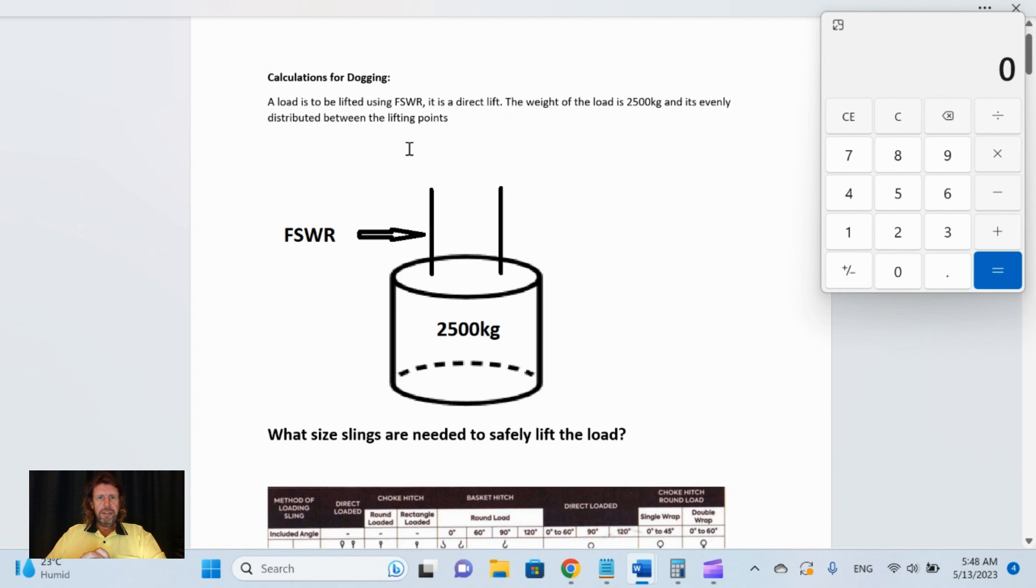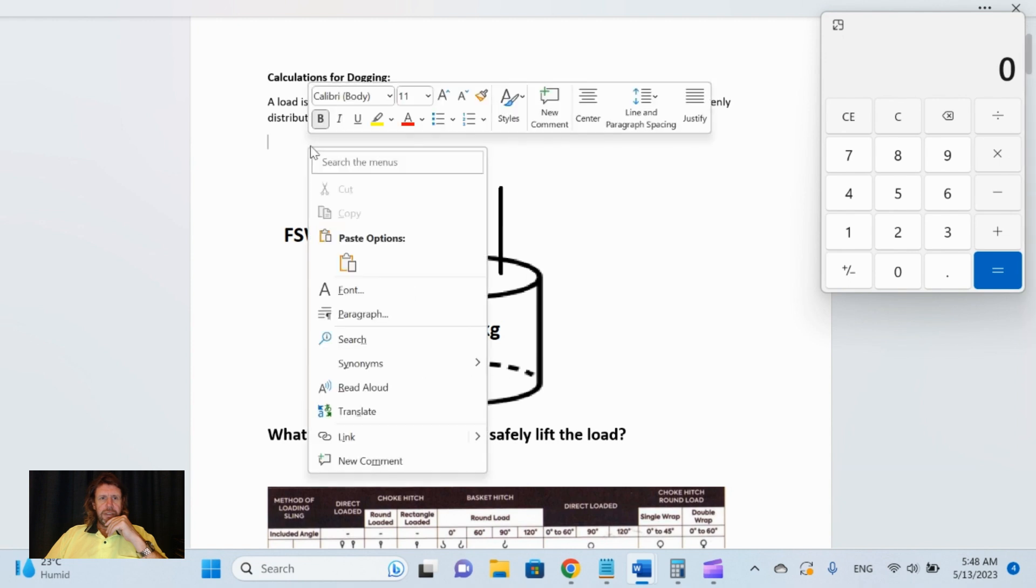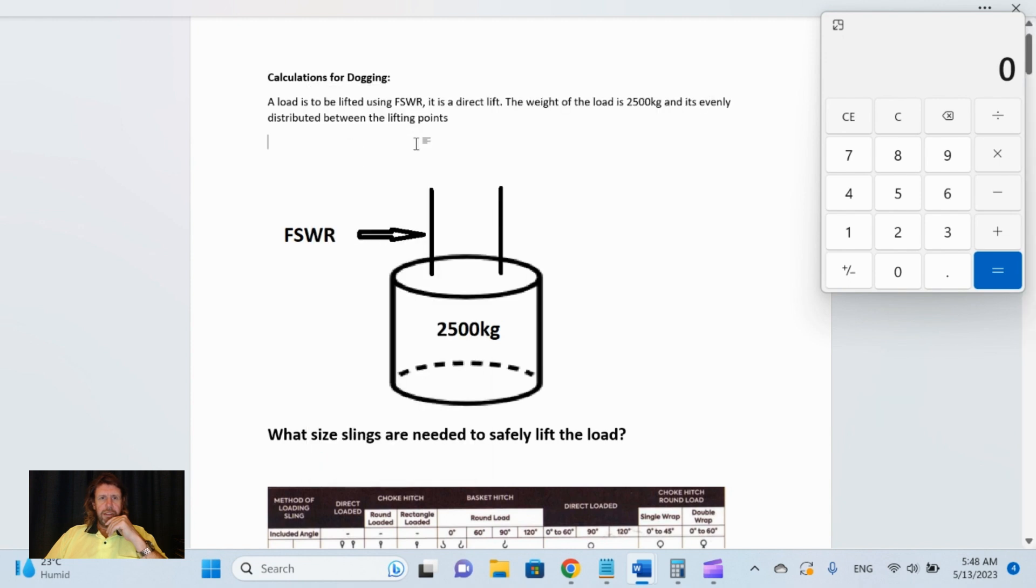First question is: the load is to be lifted using flexible steel wire rope. It's a direct lift. The weight of the load is 2500 kilos and it's evenly distributed between the lifting points. You can see here this is the FSWR, flexible steel wire rope. There's two slings there, so we need to find out what the minimum is required for each of those.